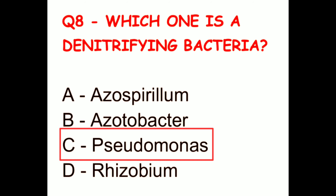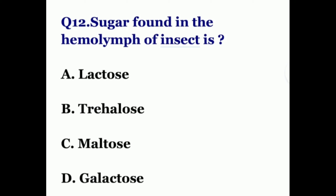Question 12. Sugar found in the hemolymph of insects is? The options are lactose, trehalose, maltose, or galactose. The correct answer is trehalose.